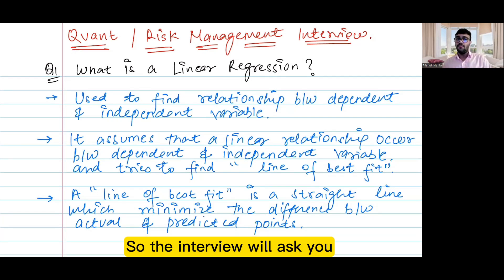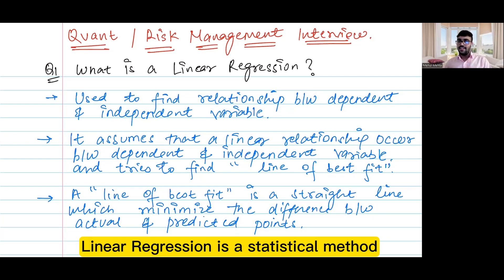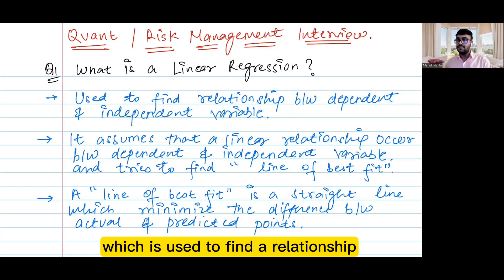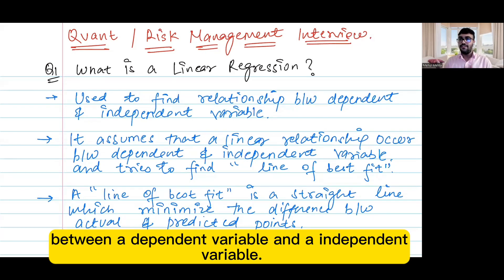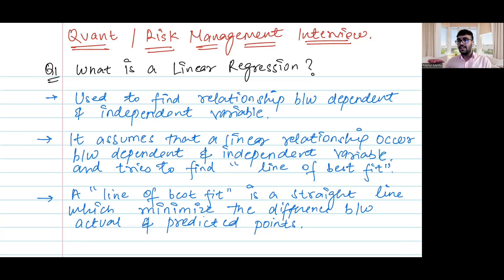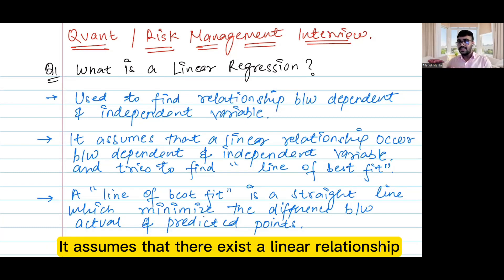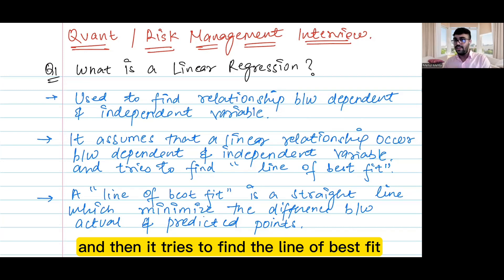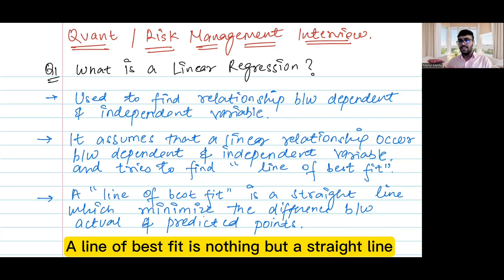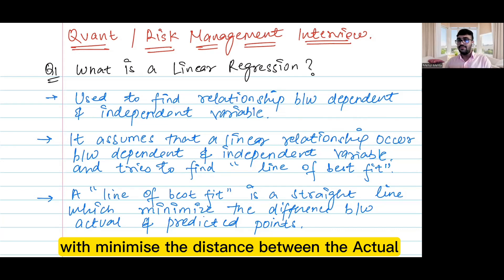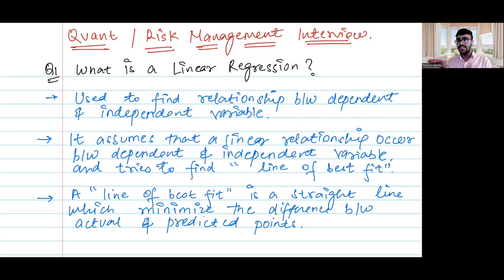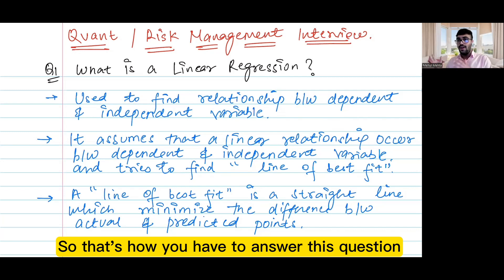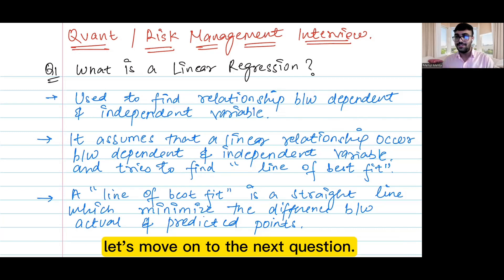The interviewer will ask you: what is linear regression? Linear regression is a statistical method which is used to find the relationship between a dependent variable and the independent variable. It assumes that there exists a linear relationship between the dependent variable and independent variable, and then it tries to find the line of best fit. A line of best fit is nothing but a straight line which minimizes the difference between the actual versus the predicted data points.